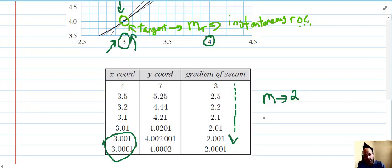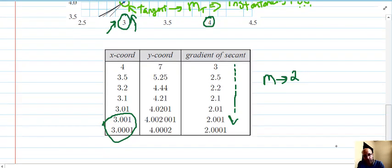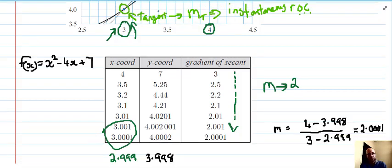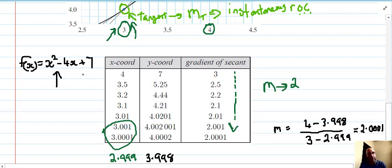Likewise if we went to the other side, we could easily work out the gradients there. So if we made the x coordinate just the other side, maybe 2.999. By the way, the function I use is x squared minus 4x plus 7. What I've done is taken a point just to the left of the other point, and we can see if I use 2.99, sub that into f(x), we get 3.998. You put that into your gradient formula and you get something very close to 2.